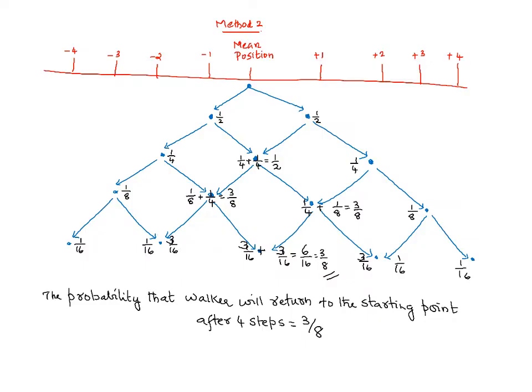So here you can see the 4 steps being taken by the random walker. So let us say that he starts from the mean position. So he could take either to left or right. So the probability is half for each.